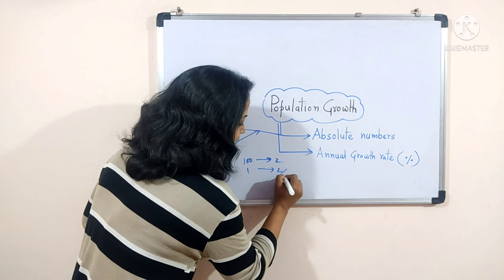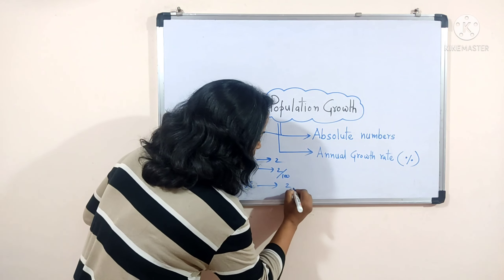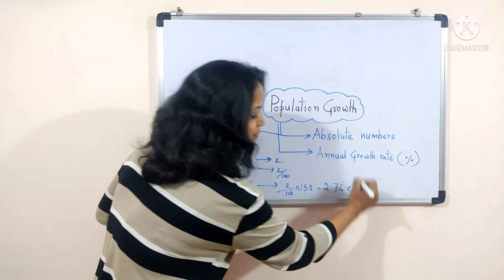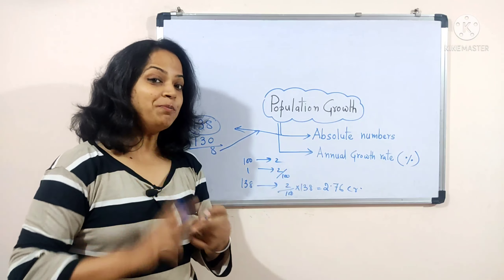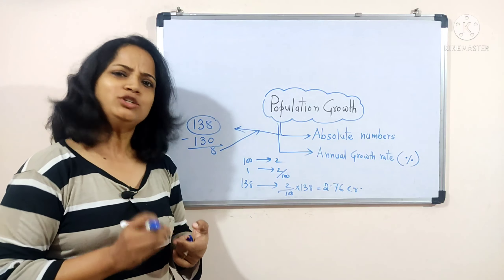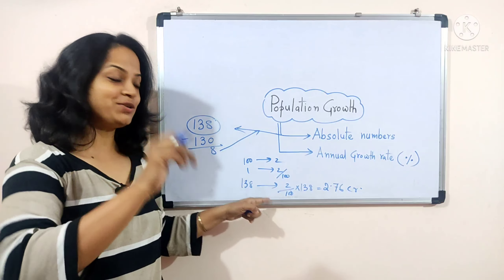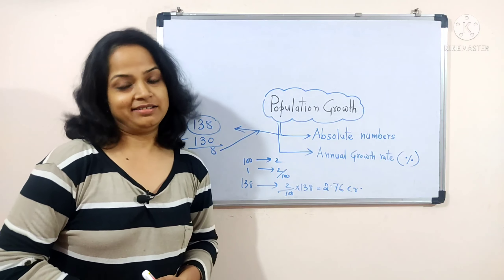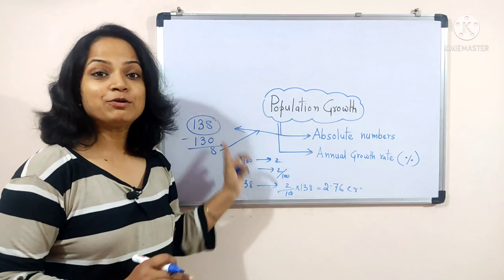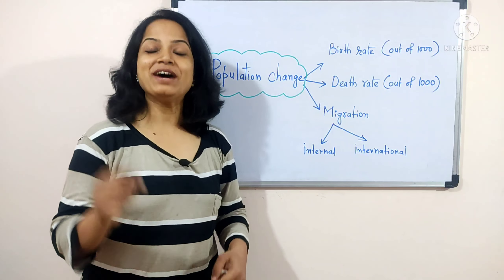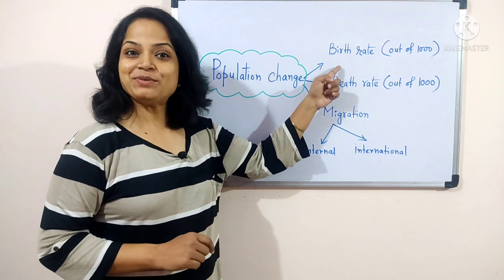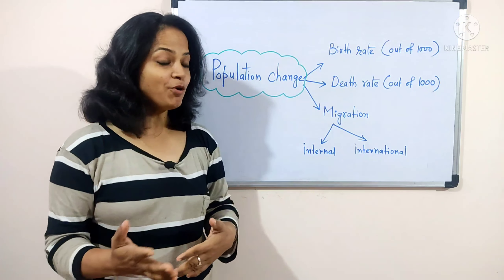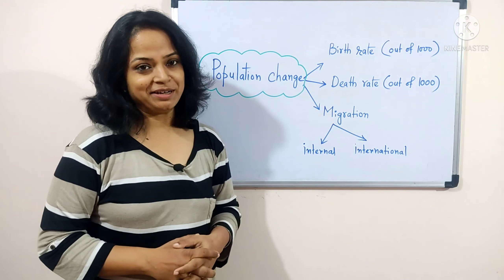For the annual growth rate — suppose there is a 2% increase. That means 2 divided by 100, multiplied by 138 crore, which equals 2.76 crore. This is all about the calculation related to population growth. Now we will look at what are the main reasons behind population change.